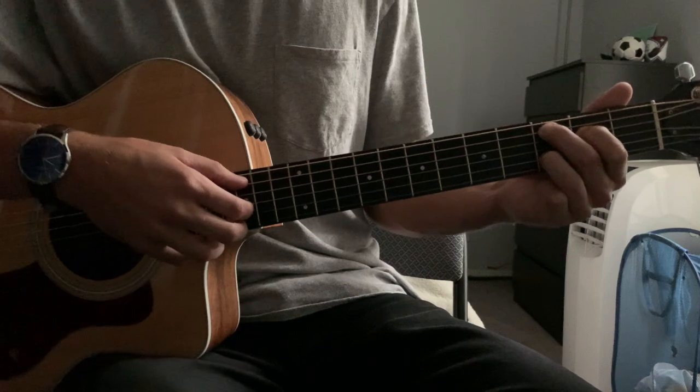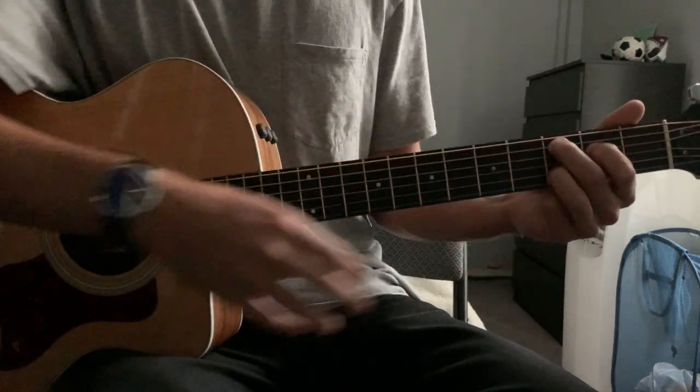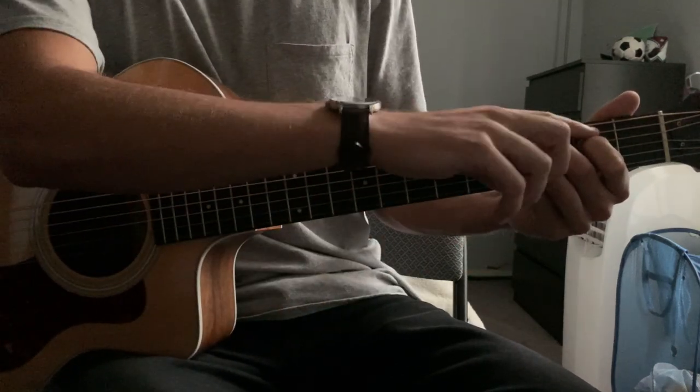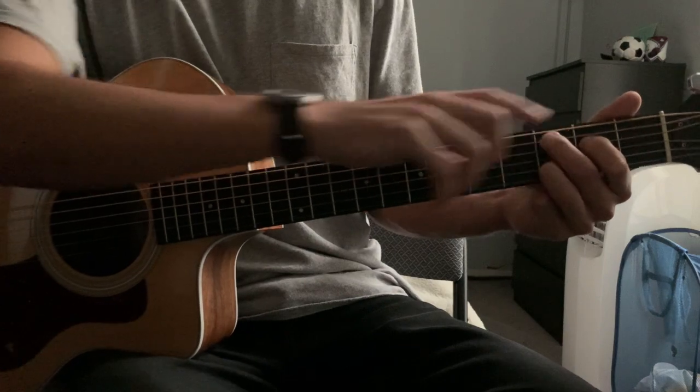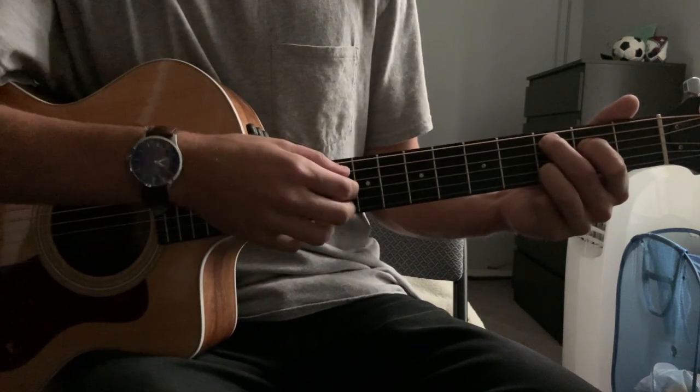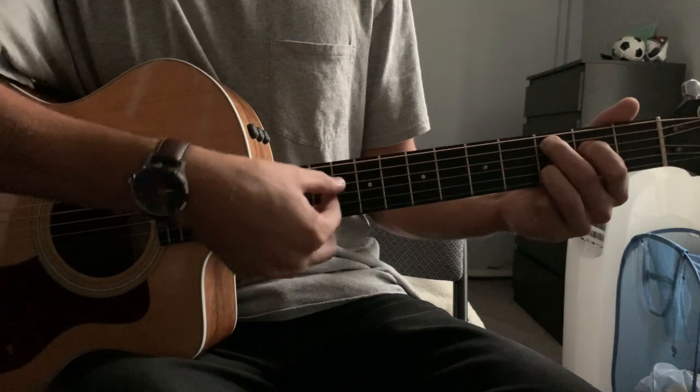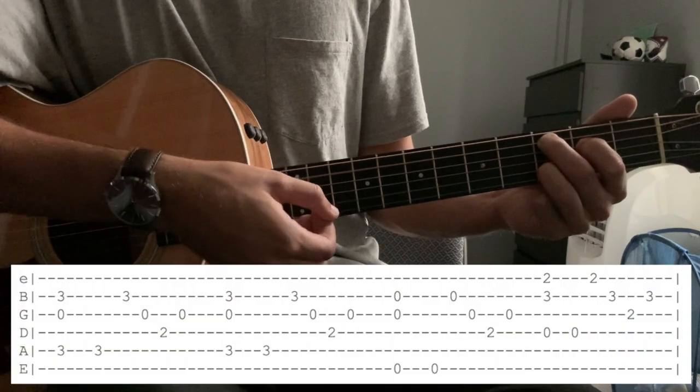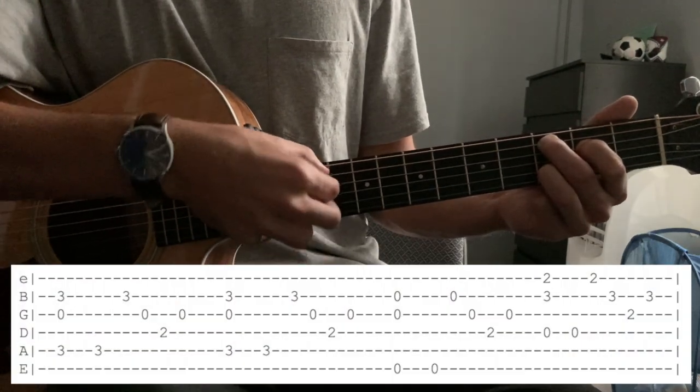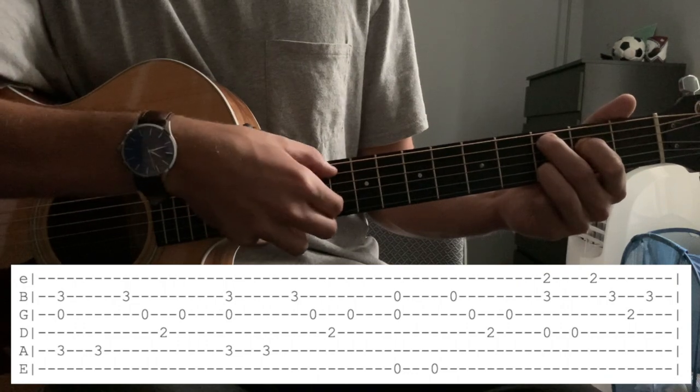Alright, so for this next part we're going to have our fingers in this position as shown here, so now your index finger is going to be on the 2nd fret of the D string. And we're going to pluck in the following manner. So I'm going to pluck three strings at once, the A, the G, and the B all simultaneously.